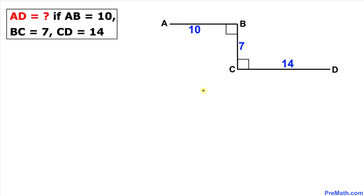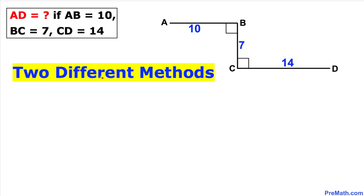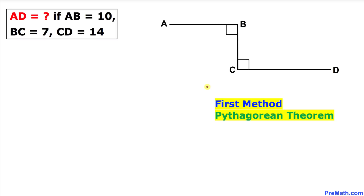Welcome to Pre-Math. In this video tutorial we have three line segments AB, BC, and CD, as you can see in this figure. These lines are perpendicular to each other, and we are going to calculate the distance AD. We are going to solve this problem by two different methods, so let's get started.